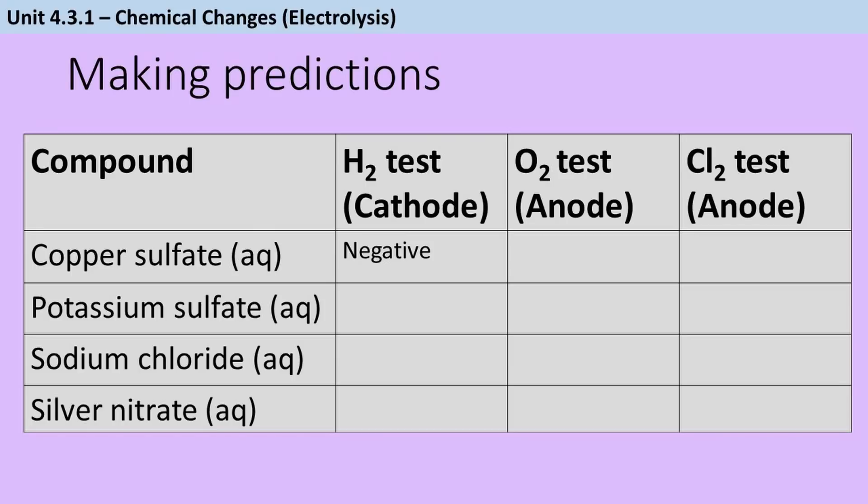At our anode, the rule was either we get a halide being produced, or if there's no halide, the hydroxide is discharged and we get oxygen. Well, we don't have a halide here, we've got sulfate. So our hydroxide is going to be discharged and we're going to get oxygen. That means that we'll see a glowing splint being relit.